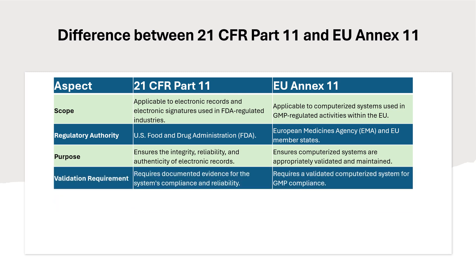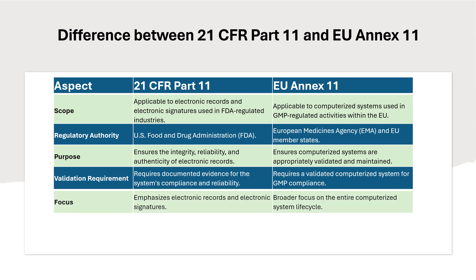Next is validation requirements. 21 CFR Part 11 requires documented evidence for system compliance and reliability, whereas EU Annex 11 requires a validated computerized system for GMP compliance. Regarding focus, 21 CFR Part 11 mainly emphasizes electronic records and electronic signatures, whereas EU Annex 11 broadly focuses on the entire computerized system lifecycle approach.